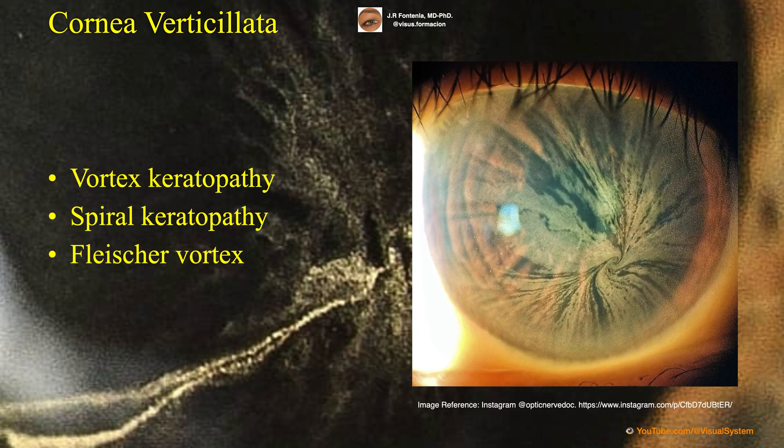In the literature we can find other names for cornea verticillata. The best known are Vortex Keratopathy, Spiral Keratopathy, and Fleischer Vortex.